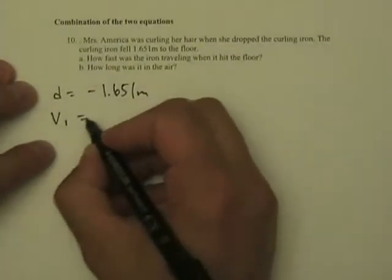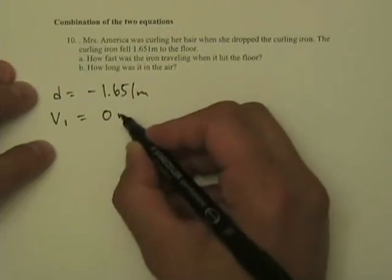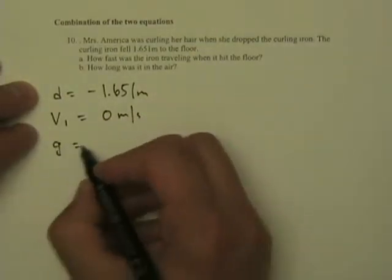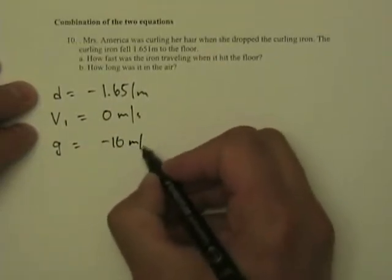You also know that if she drops it, it's got an initial velocity of zero meters per second, and you also know that gravity is minus 10 meters per second squared.